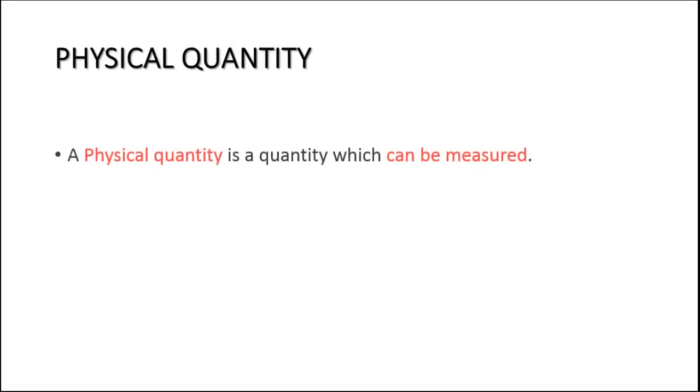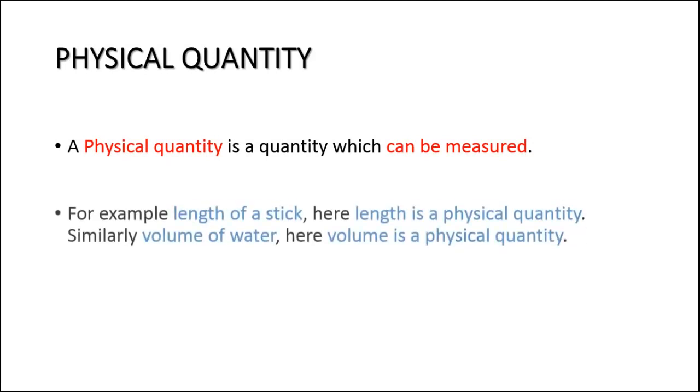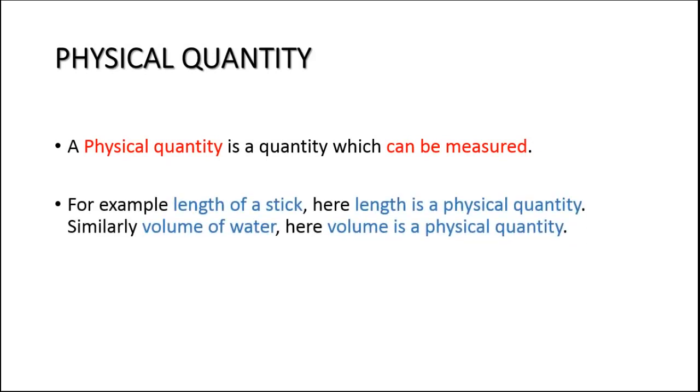First, we will explain physical quantity. A physical quantity is a quantity which can be measured. For example, length of a stick—here in this example, length is a physical quantity. Similarly, when we talk about volume of water, here volume is a physical quantity.